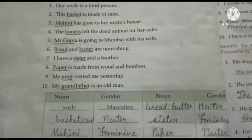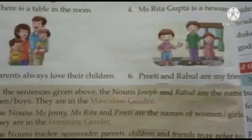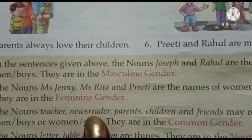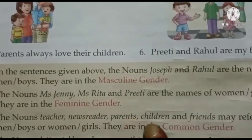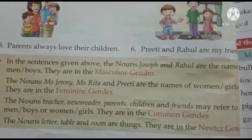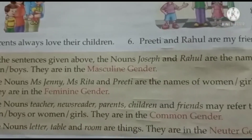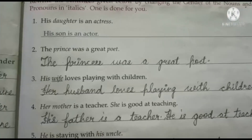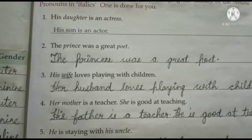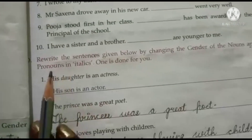All these come under neuter gender. One more gender is common gender — nouns like teacher, newsreader, parents, children, and friends that may refer to both men and women. Common gender can be male or female. For example, 'doctor' can be a male doctor or a female doctor.